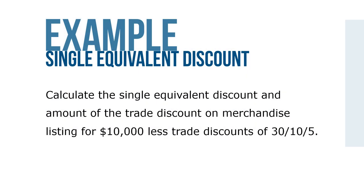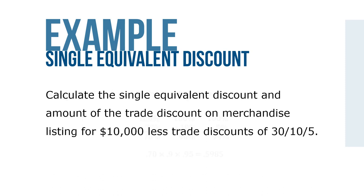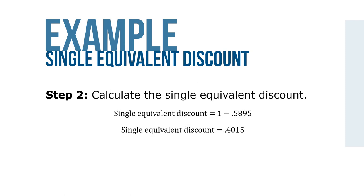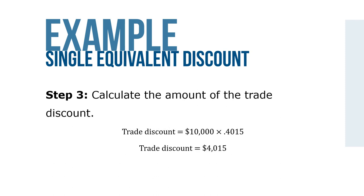For example, calculate the single equivalent discount and amount of trade discount on merchandise listing for $10,000 less trade discounts of 30%, 10%, and 5%. Step 1: net price factor equals 0.70 times 0.90 times 0.95 equals 0.5985. Step 2: single equivalent discount equals 1 minus 0.5985 equals 0.4015. Step 3: trade discount equals $10,000 times 0.4015 equals $4,015.